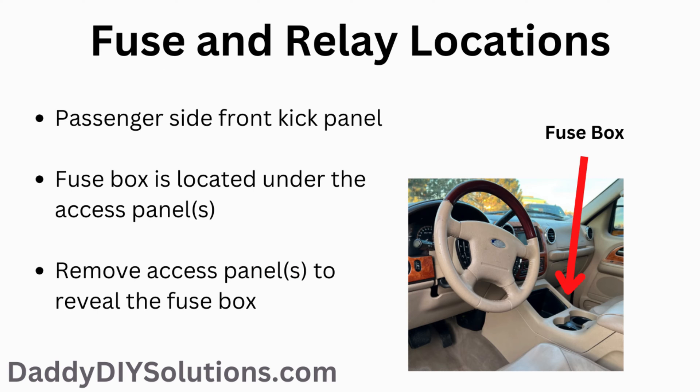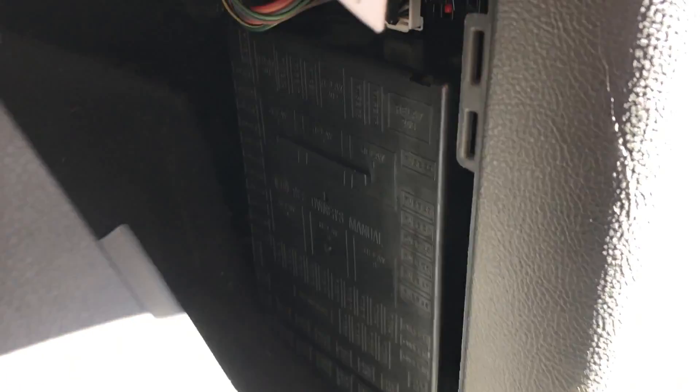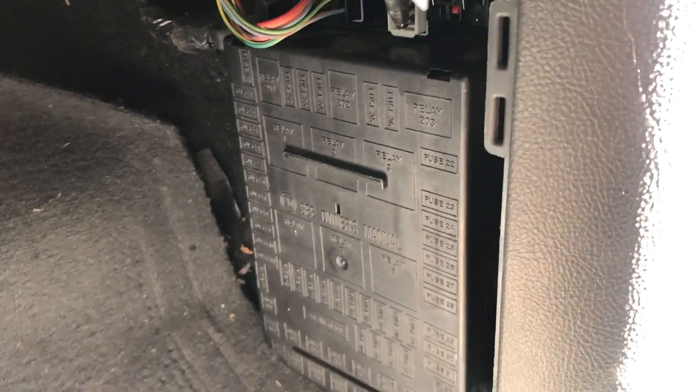In order to locate the fuse box, locate the passenger side front kick panel. The fuse box is located under the access panel. Remove the access panel to reveal the fuse box.